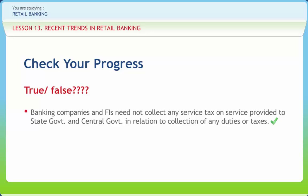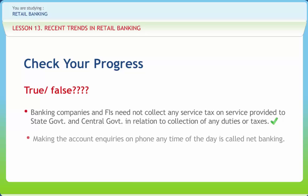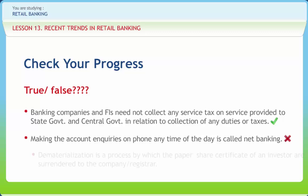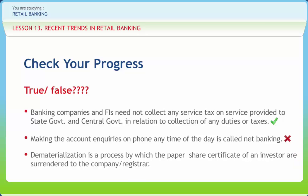Right. Making account enquiries on the phone at any time of the day is called net banking — Right or Wrong? Dematerialization is a process by which the paper share certificates of an investor are surrendered to the company or registrar — Right or Wrong?